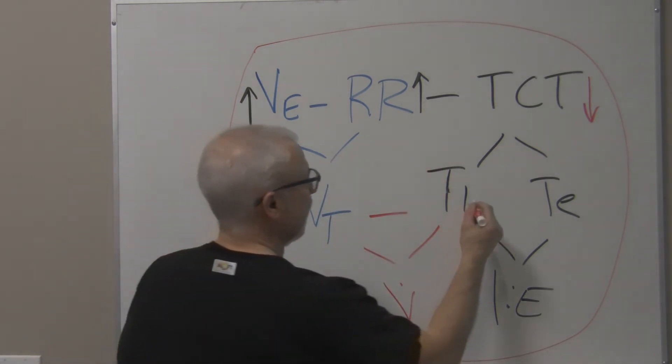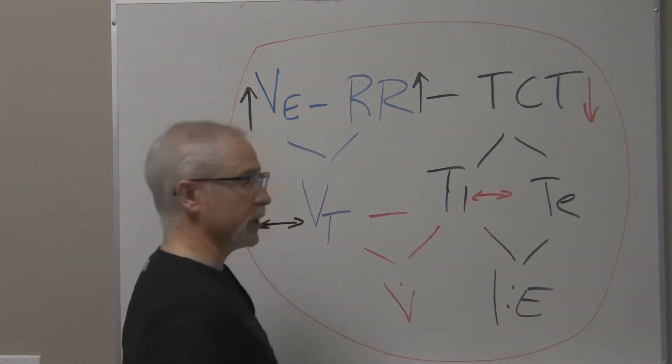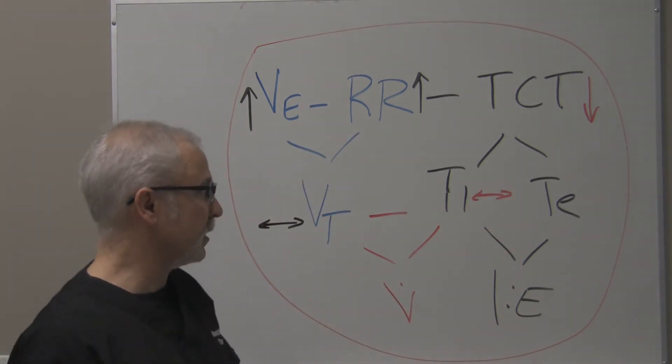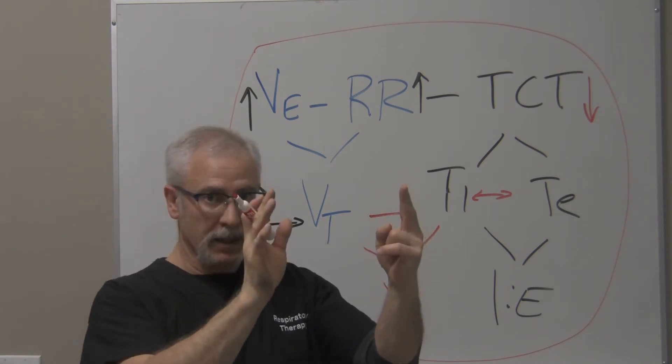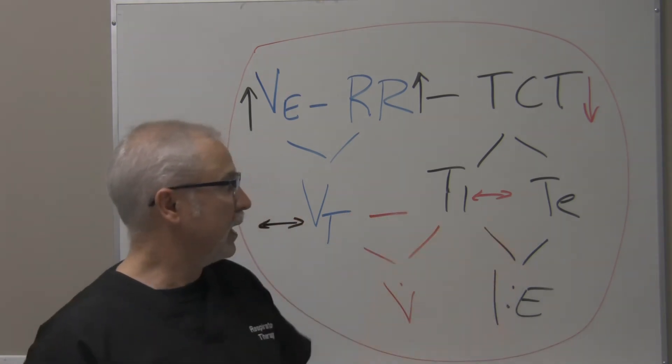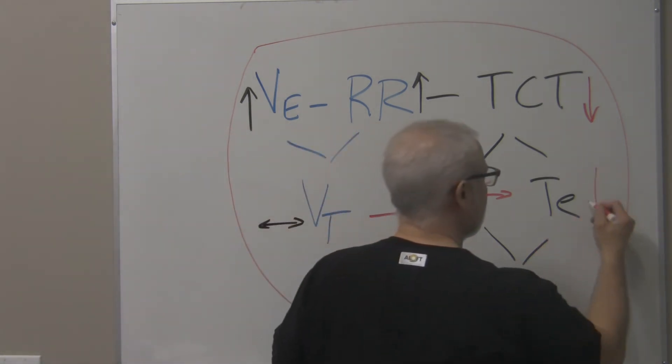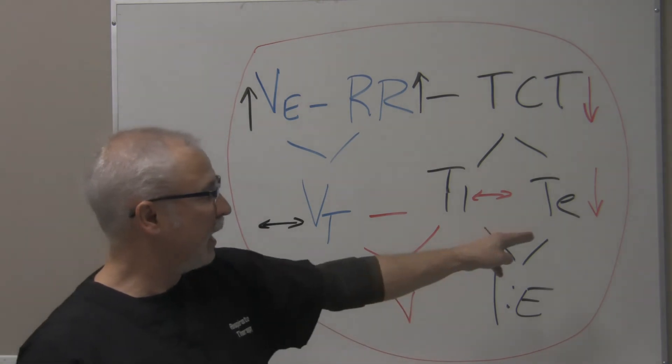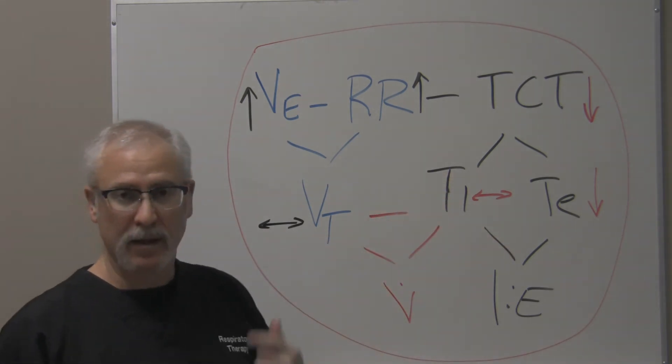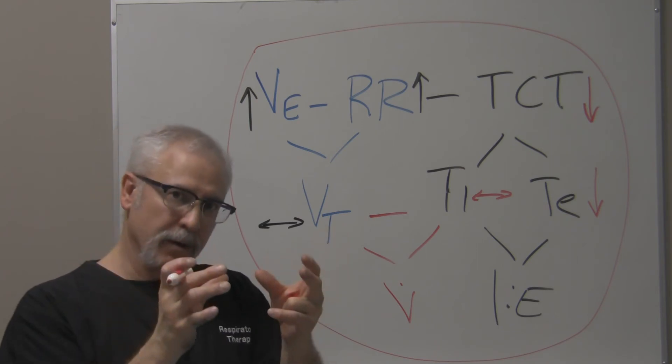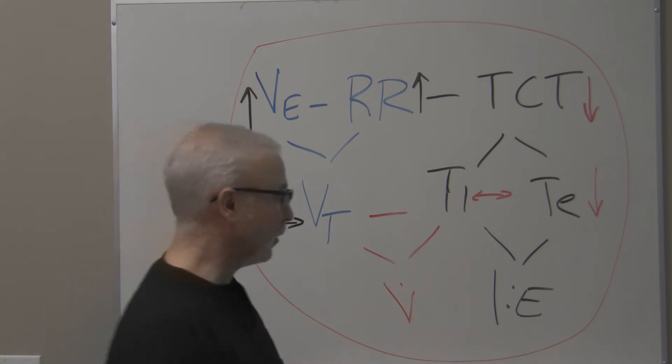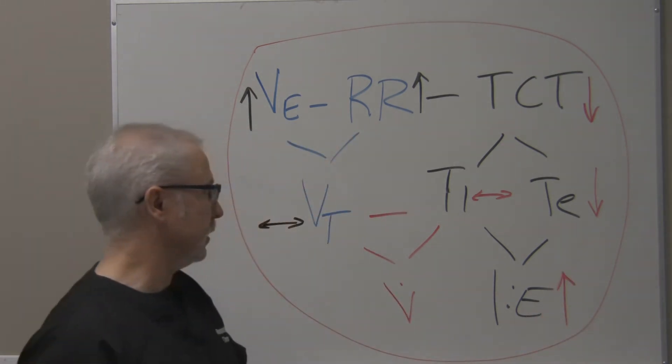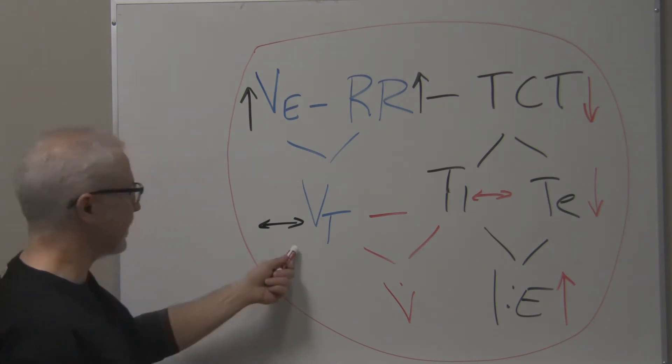So if within that total cycle time, the Ti remains consistent because it's preset on a ventilator or the patient maintains the same inspiratory time, what has to happen to expiratory time? If you have a TCT that gets smaller but the I time remains constant, what has to happen to Te? Well, Te is going to decrease in size. So if you have a decreasing Te while the Ti remains constant, they're becoming similar, getting close to being the same value in size. That is an example of an increasing I to E ratio.